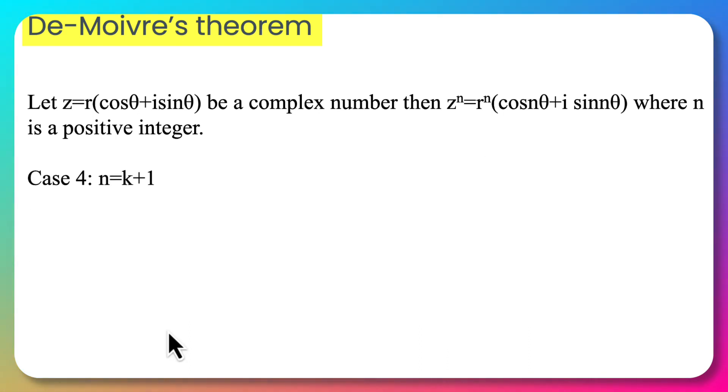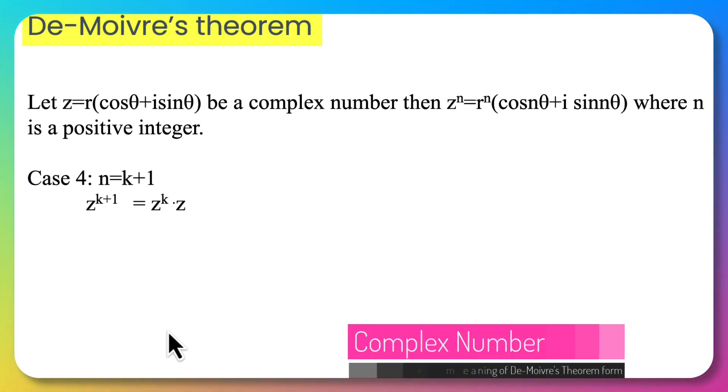Now we will prove the inductive step. This is case 4 and we assume that n = k+1. Then z^(k+1) = z^k × z.